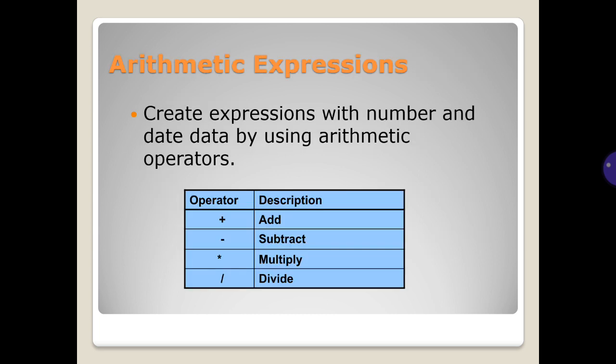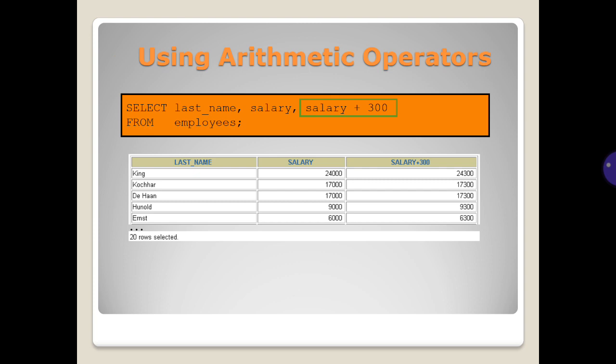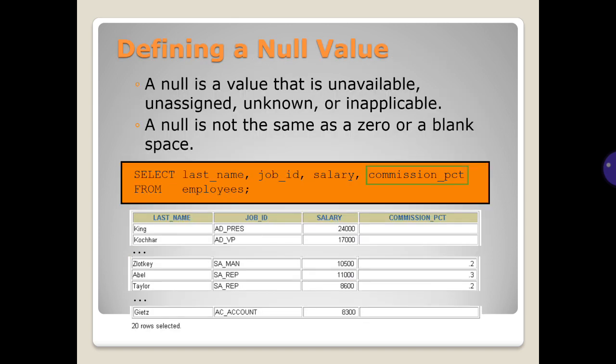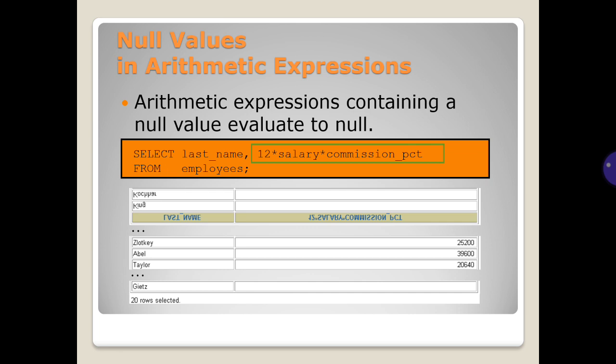Arithmetic expressions: create expressions with numbers and dates using arithmetic operators. You can refer to the operator precedence table. Defining a NULL value: NULL is a value that is unavailable, unassigned, unknown, or inapplicable. NULL is not the same as zero or a blank space. Arithmetic expressions containing a NULL value evaluate to NULL.